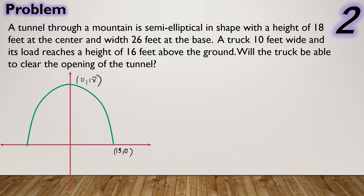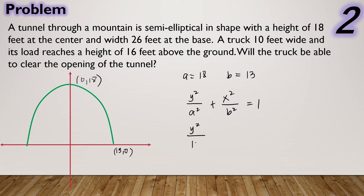In the situation, we need the equation of the ellipse to determine whether the truck will clear the opening of the tunnel. With the center at the origin and the major axis along the y-axis, we have a = 18 and b = 13. From the standard form of the equation with major axis along the y-axis: y²/a² + x²/b² = 1. Substituting a = 18 and b = 13, we have y²/324 + x²/169 = 1.